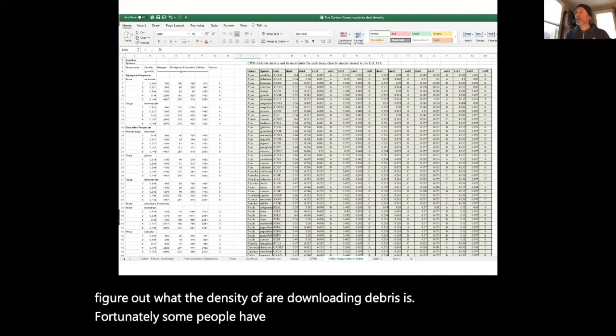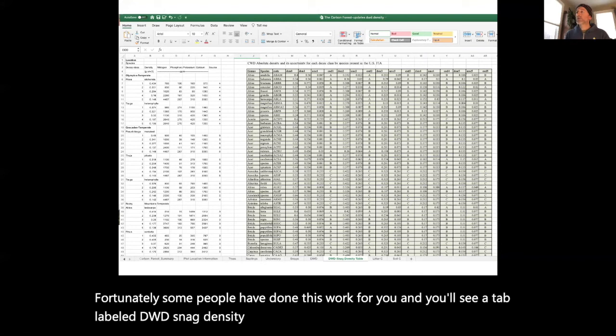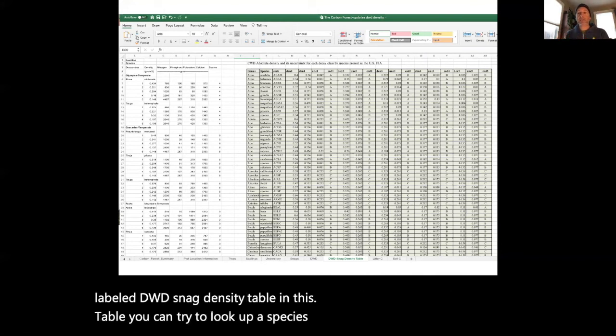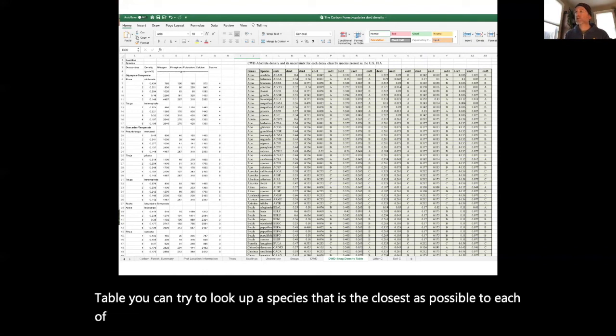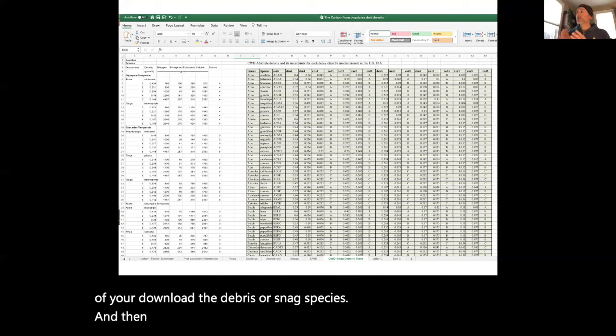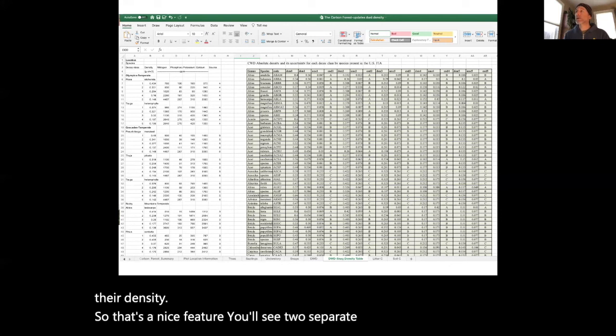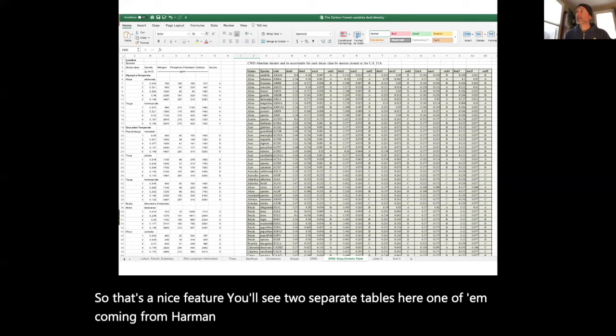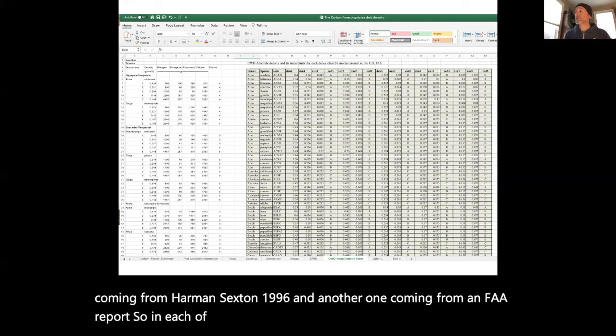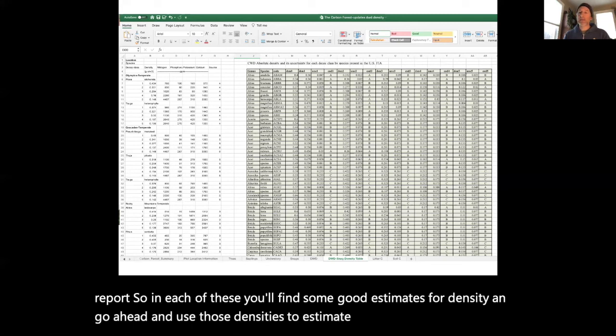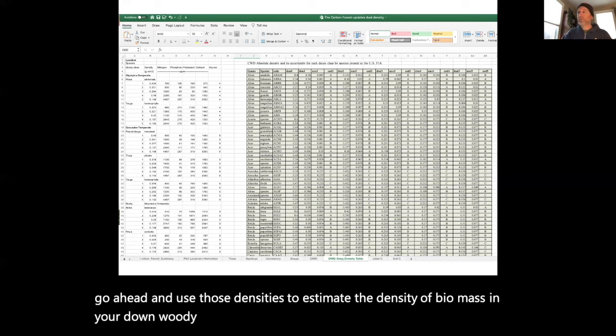Fortunately, some people have done this work for you. You'll see a tab labeled DWD dash snag density table. In this table, you can try to look up a species that is the closest as possible to each of your down woody debris or snag species. Then based on their decomposition code, we can estimate their density. You'll see two separate tables here, one from Hartman and Sexton 1996 and another from an FIA report. You'll find some good estimates for density and go ahead and use those densities on the spreadsheet.